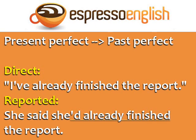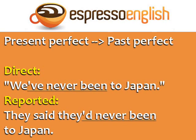Present perfect verbs become past perfect. Direct: 'I've already finished the report.' Reported: She said she'd already finished the report. Here's another example of present perfect to past perfect. Direct: 'We've never been to Japan.' Reported: They said they'd never been to Japan.